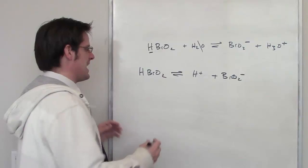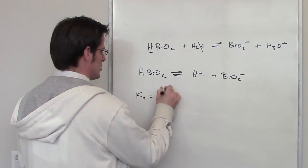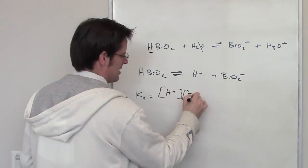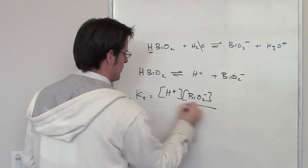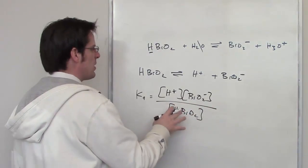What, then, is going to be the Ka expression of this? Well, the Ka is going to be equal to the individual concentrations of the products, which are going to be H+ times BrO2- divided by the concentration of the reactant.